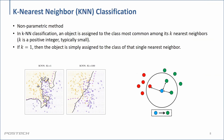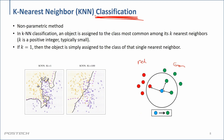Now let's move on to k-nearest neighborhood classification — not regression. The core concept is pretty much the same. Suppose we have red and green training data points with labels for a classification problem. Previously, we built models with classification boundaries, but in KNN we don't do that. We don't have parameterized models.